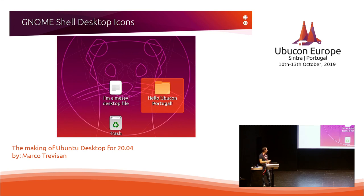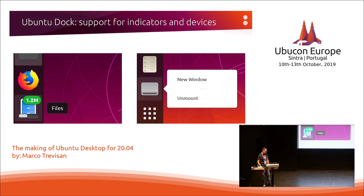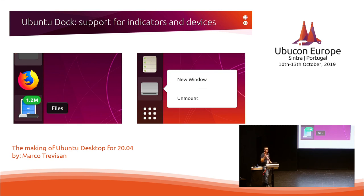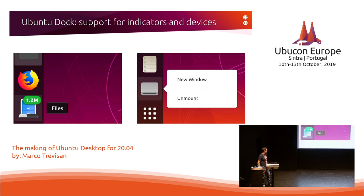We improved the Desktop Icons extension this cycle and will continue improving it next cycle. The Ubuntu Dock launcher now has indicator and progress support, and we're now supporting devices — for example external disks, mounted cloud devices — showing them in the launcher as Unity used to do. You can interact with icons to remove, eject, or unmount volumes. This is all a community contribution and we have to thank the contributor who basically did all the work.